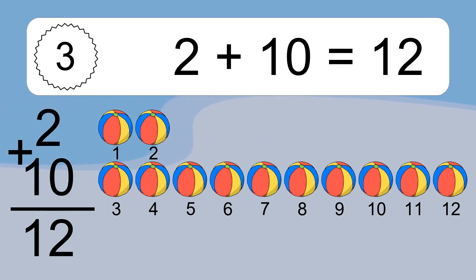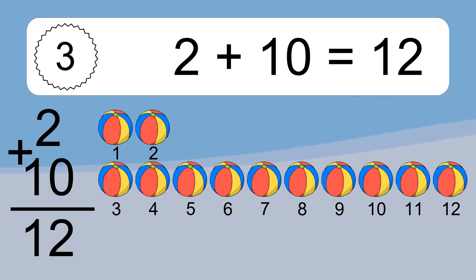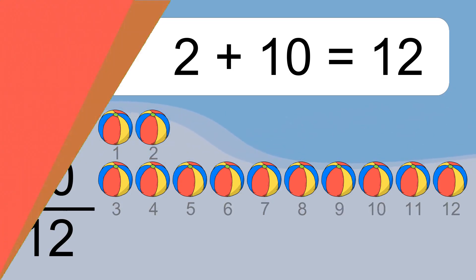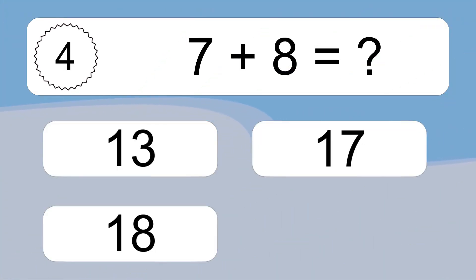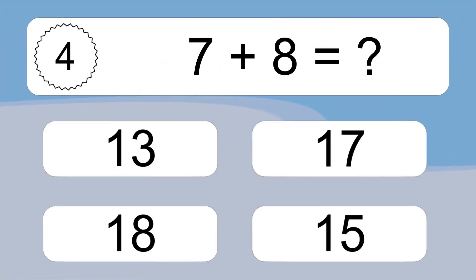2 plus 10 equals what? 1, 2, 3, 4, 5, 6, 7, 8, 9, 10, 11, 12.